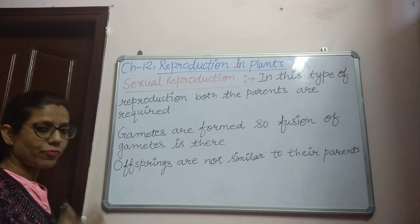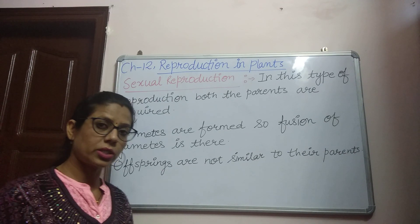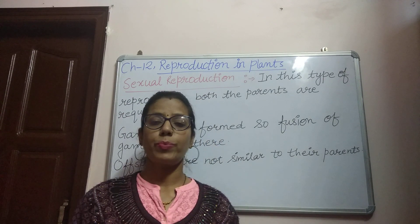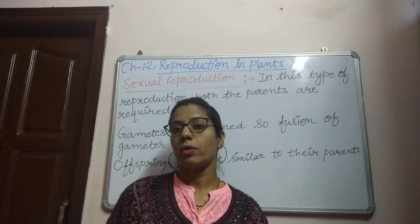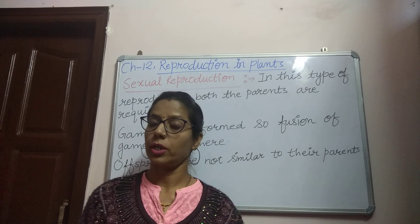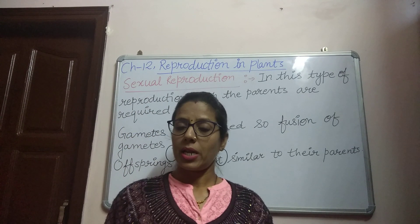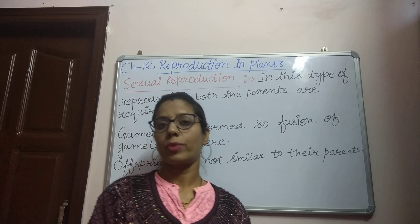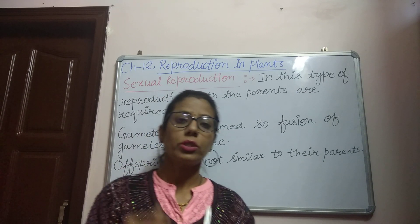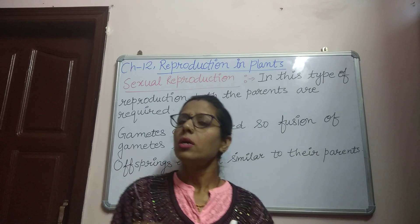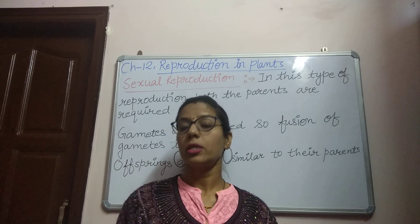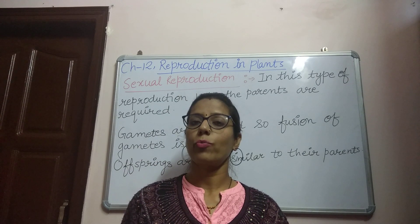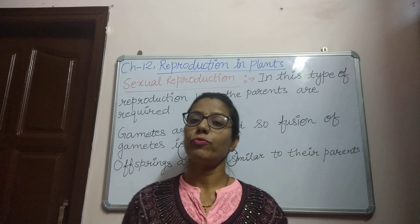Male and female gametes are fusing in this type of reproduction, so the new offspring are not similar to their parents. In asexual reproduction, offspring are genetically similar to their parent because they are produced from only one parent. But in sexual reproduction, the characteristics of both mother and father come into the new offspring, so the offspring are not genetically similar to their parents — because they are produced by the fusion of two different gametes.